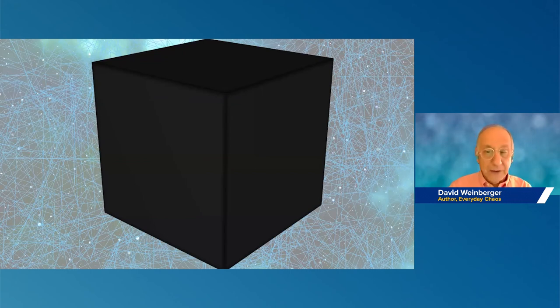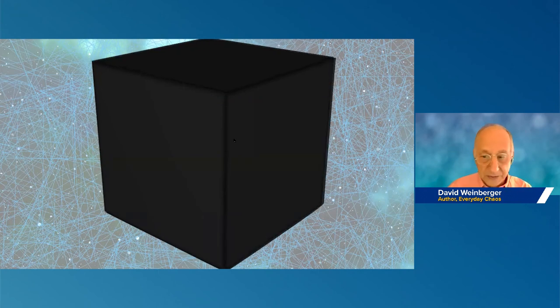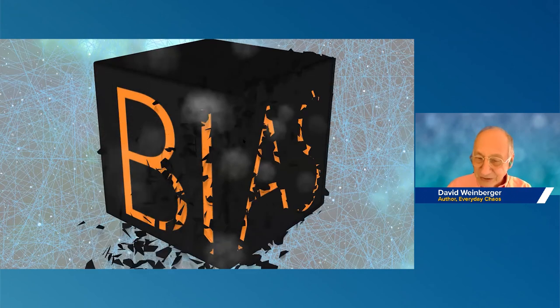They are designed in order to produce accurate results. It turns out that if it does so in a way that we can understand, great. If not, then we have other challenges. The natural state of a machine learning system is to be a black box. Doesn't mean we can't open it up in at least some ways in some circumstances. This is a problem.